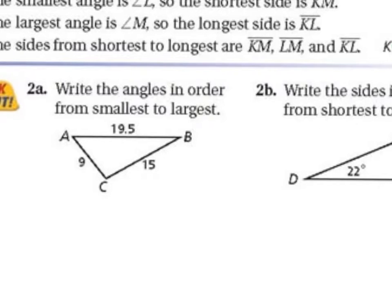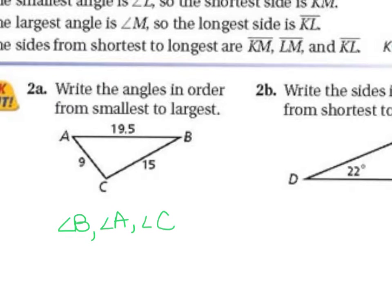Practice problem 2A: write the angles in order from smallest to largest. The sides are given, so the smallest angle is opposite the side of length 9, which is angle B. Next is opposite the 15, which is angle A. And the largest is opposite the 19.5, which is angle C.